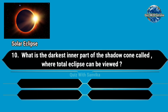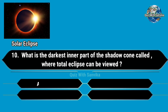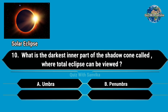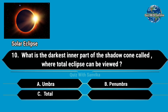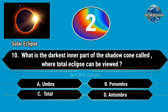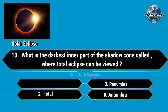What is the darkest inner part of the shadow cone called where a total eclipse can be viewed? Options are A. Umbra, B. Penumbra, C. Total, and D. Antumbra. Answer is A. Umbra.